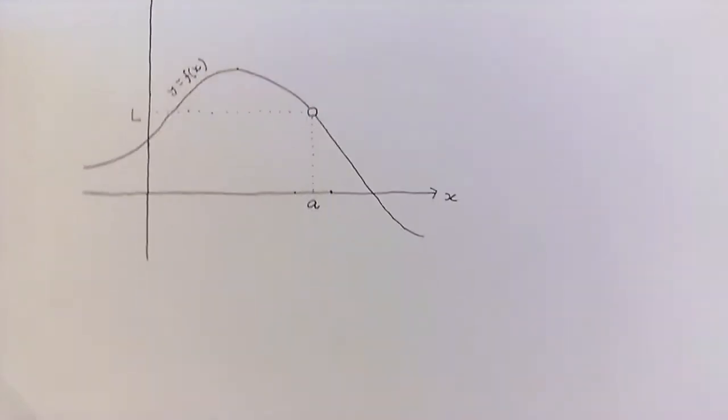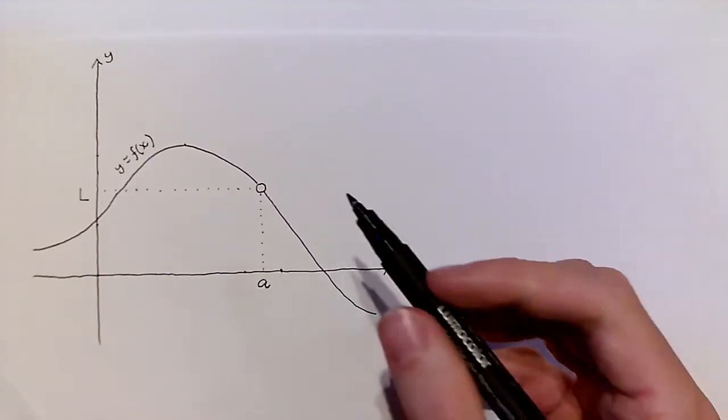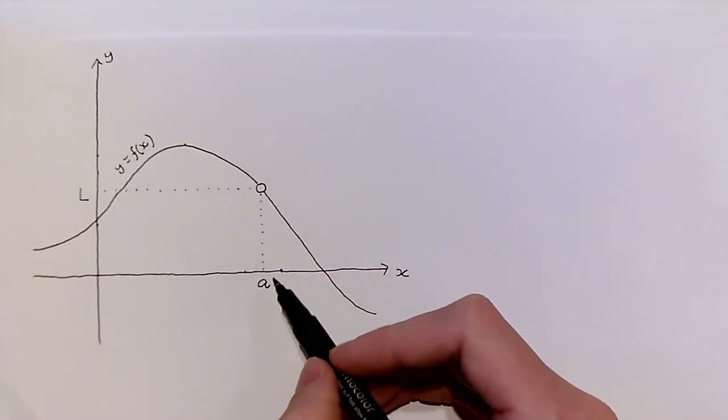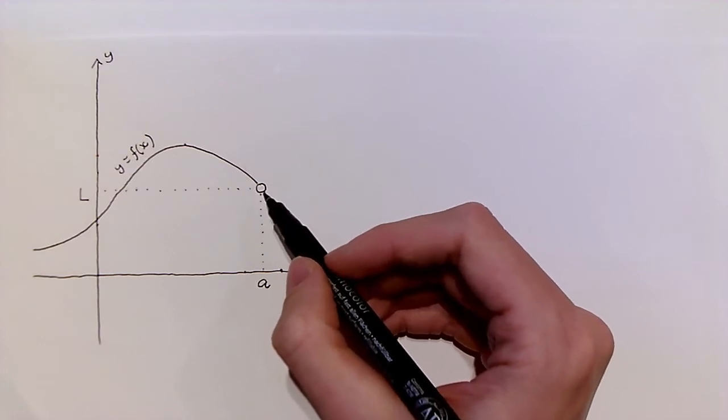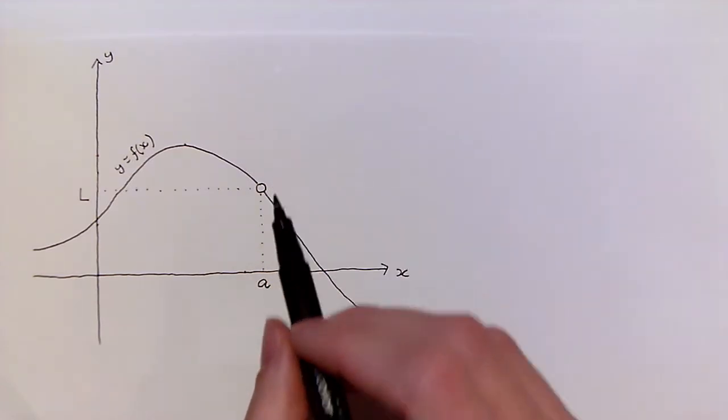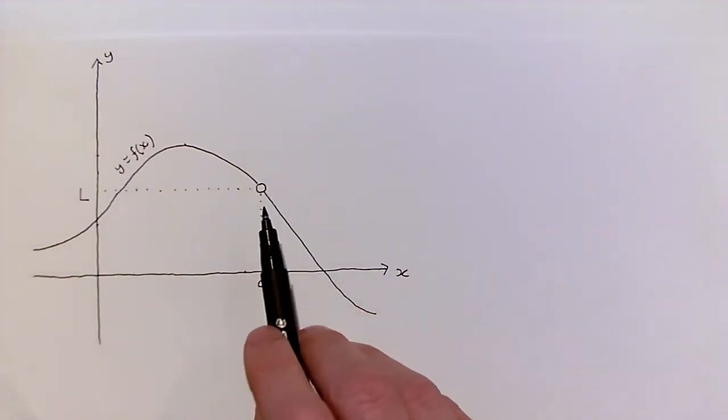It might help to think about what that means graphically. So here's a graph of some particular function f. Note that here at the special point a, I've actually drawn a hollow circle. All I mean by this is that in this example, I'm imagining that f is not actually even defined at a.